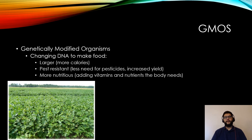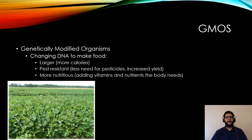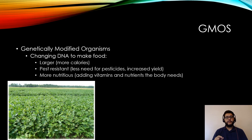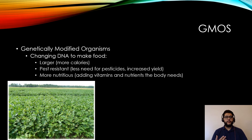Genetically modified organisms are a controversial topic. We now have the ability to modify food genetically. This began with selective breeding — saving seeds from the biggest, most drought-resistant plants. Now we can go in and actually modify genes, adding or removing them to make crops pest resistant, so they won't die when sprayed for bugs or weeds.